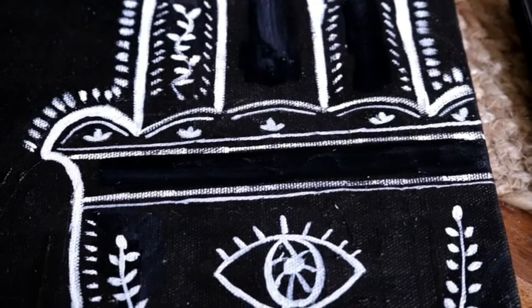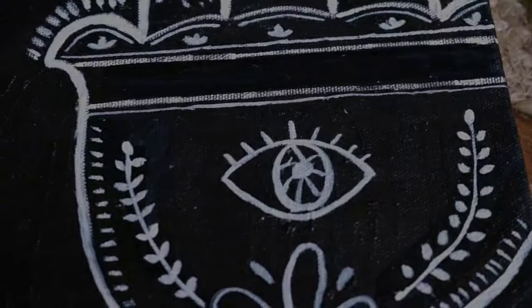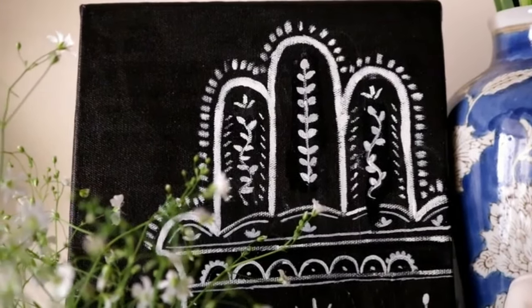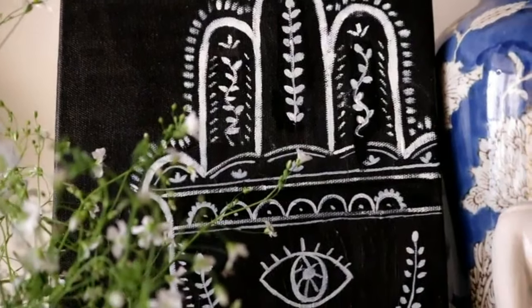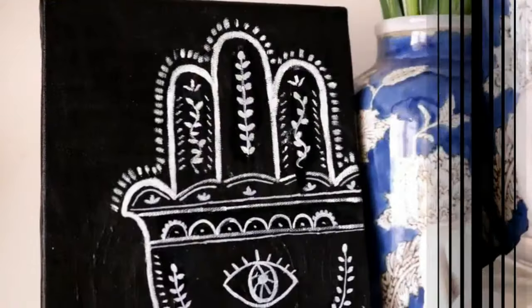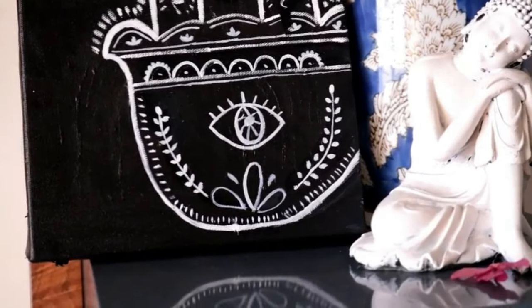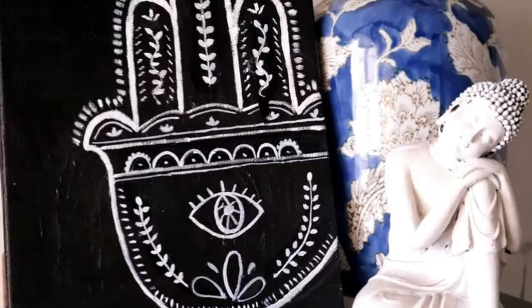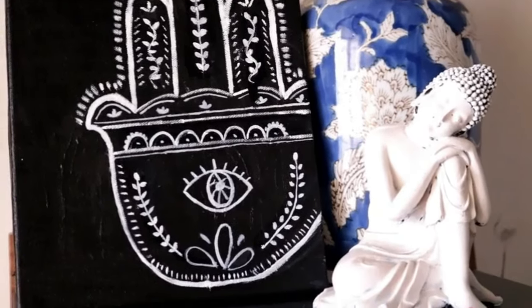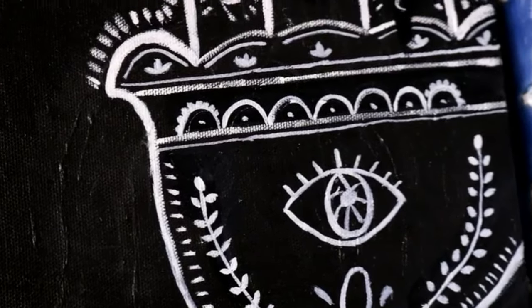This is how the Hamsa wall art has finally turned out. I think it looks really nice. It gives that boho feel to any dull corner. You can even hang it on your wall if you want to have a boho gallery wall. It's totally up to you. You can try different colors, different designs. There are various options you can go ahead with. I hope you guys enjoyed this DIY and now it's time to move on to the next DIY.